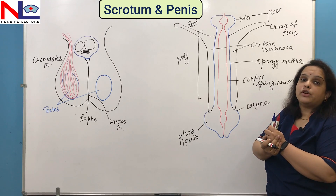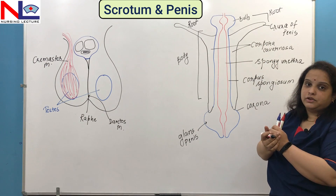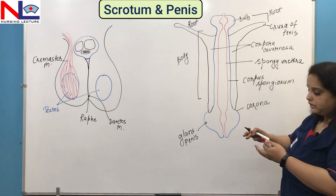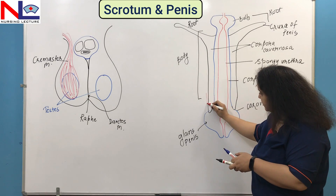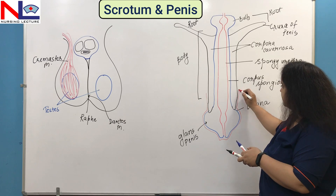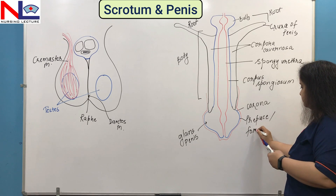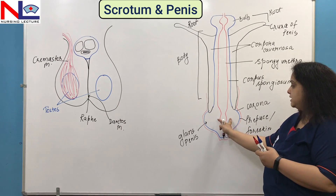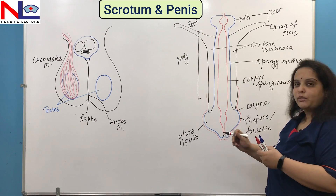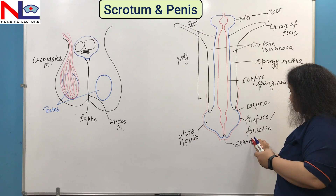The crura are also covered by the ischiocavernosus muscle. The muscles surrounding the bulb help in ejaculation when they contract. Ejaculation is the release of semen exteriorly. There is a skin that covers the glans penis, called the prepuce or foreskin. There is a dilated end of the urethra lying within the glans penis, and externally it opens as a slit-like opening called the external urethral orifice.